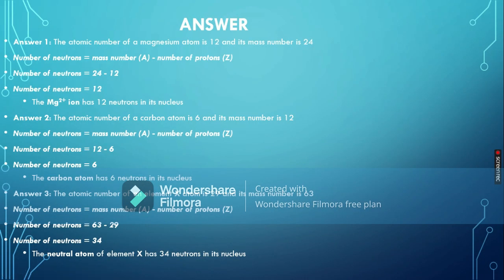With this we are done with the sixth point of the syllabus on particles in the atom. In the next video we will be discussing the last point of our 1.1 topic, which will be about atomic and ionic radius. Make sure to subscribe to our channel, hit the like button, leave a comment below if you have any questions about today's or previous videos, and share the videos with your classmates. That's it for today — I'll see you in the next video, till then take care.